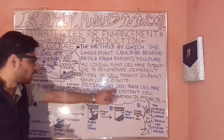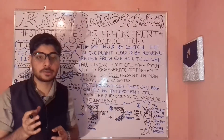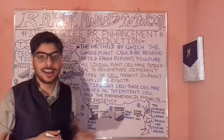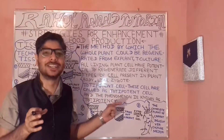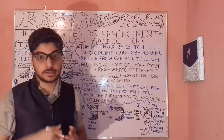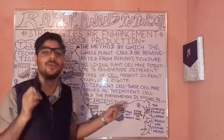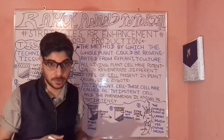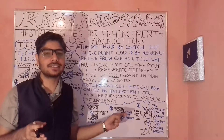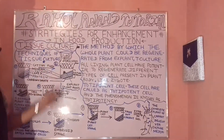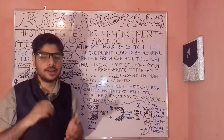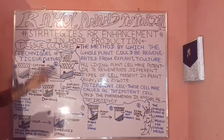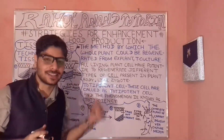These totipotent cells have the unique potential to develop a new baby plant or an explant from the pre-existing plant body. The whole wonderful process and phenomena of tissue culture comes under the concept of totipotency. Now let's try to discover and understand tissue culture and its techniques.